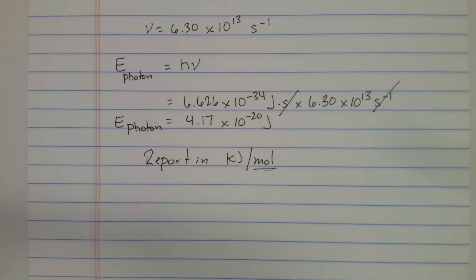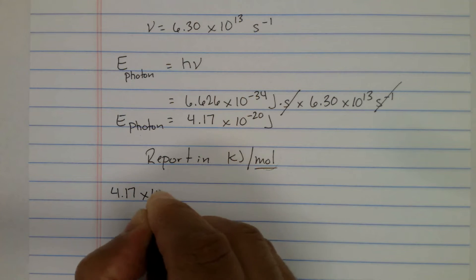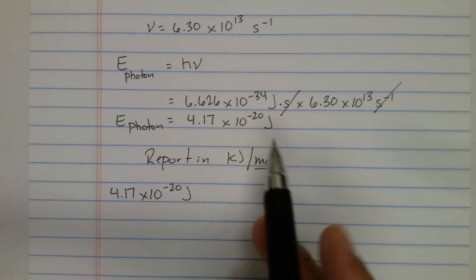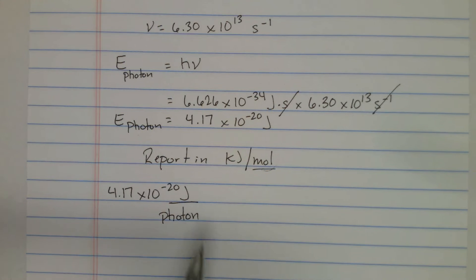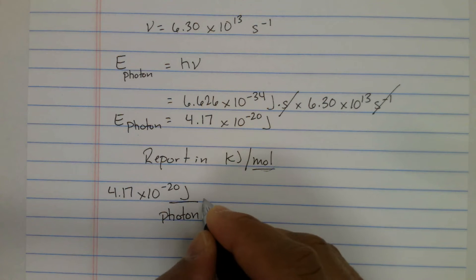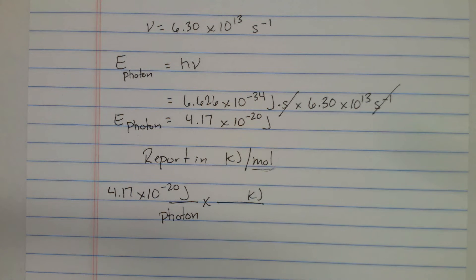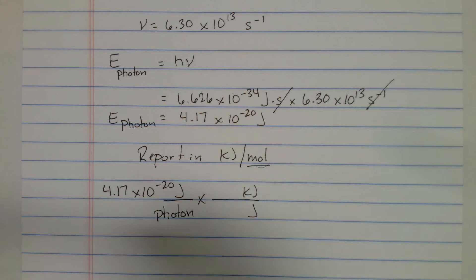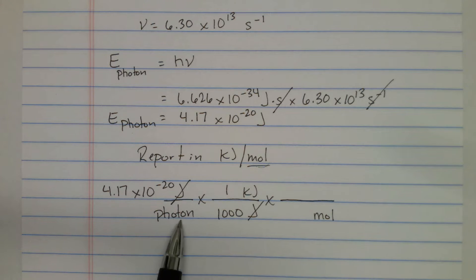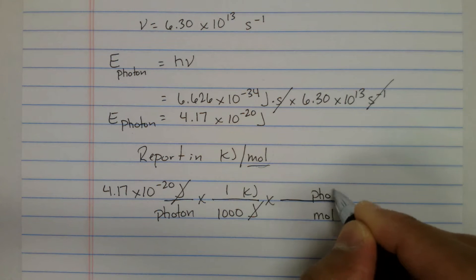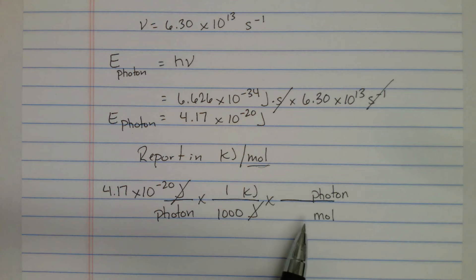Let's make this conversion. We start with 4.17 times 10 to the minus 20 joules per photon. To convert joules to kilojoules, we put joules in the denominator and use the fact that 1 kilojoule equals 1000 joules — joules cancel. Then to cancel photons and get moles in the denominator, we use Avogadro's number: in one mole of anything there are 6.022 times 10 to the 23 photons. At the end we have units of kilojoules per mole.